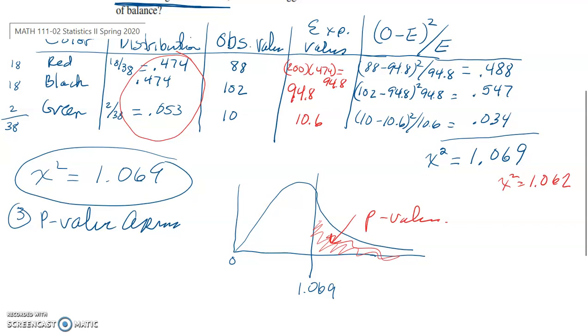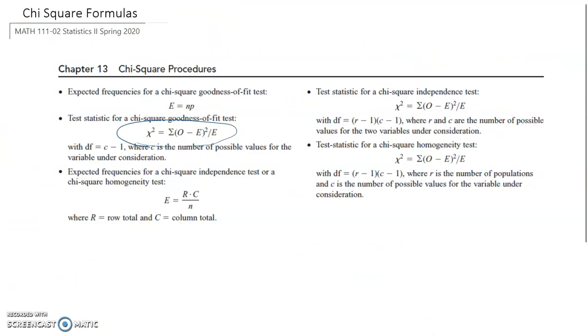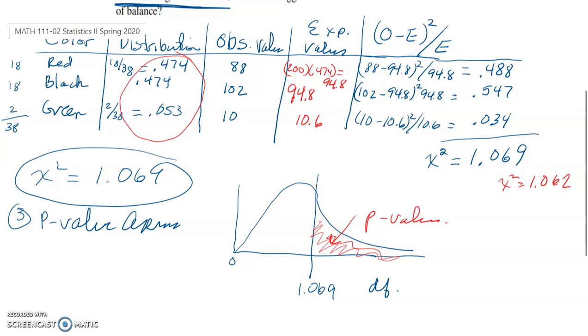So, before we go on, though, as you know, with a chi-square, it's kind of like with a t-table, you need degrees of freedom. Go to your formula sheet if you don't remember degrees of freedom. Degrees of freedom is equal to c minus 1, where c is the number of possible values for the variable under consideration. Remember what I told you in class? Think of c as categories. So, I want to go back to the practice problem. We only have three categories. So, our degrees of freedom is 3 minus 1. So we're going to look up 1.069 on the chi-square table at two degrees of freedom.